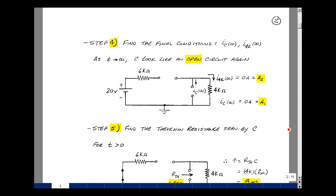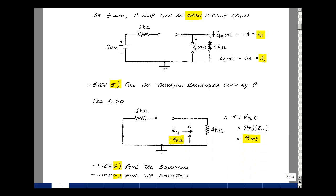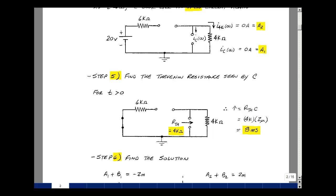The fifth step in our algorithm is to find the Thevenin resistance, seen by the capacitor, with all of the independent sources set equal to 0, and the switch in the state after t equals 0. That was an open circuit here, short for the battery. Looking back in here, all I see is the 4k resistor. So 4k times the 2 microfarads that was here would be our time constant, that's 8 milliseconds.